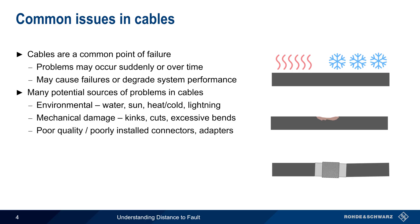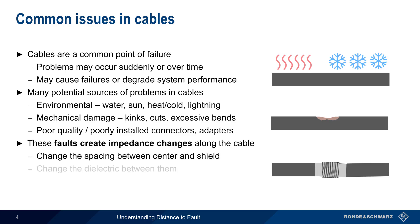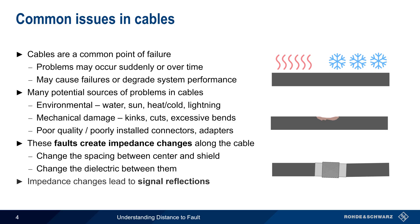Installation or materials issues are another common cause of cable problems. All of these problems, or faults, have one common characteristic: they change the impedance along the cable. Anything which changes the spacing between the center and shield, or the dielectric between them, will change the cable's impedance at that point. And these impedance changes cause signal reflections at the points where these changes occur.